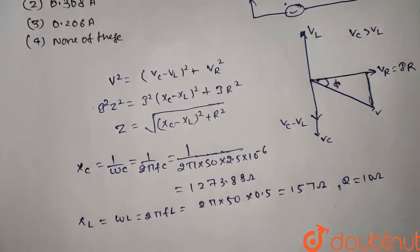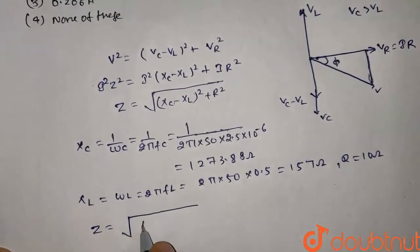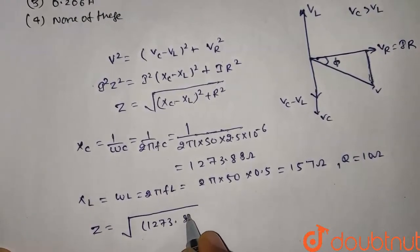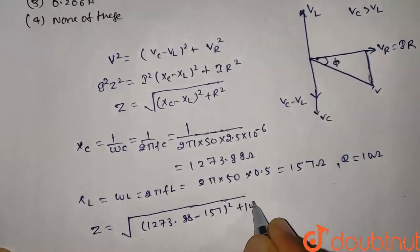Now we put the values. Z equals square root of XC minus XL: 1273.88 minus 157 squared, plus 10 squared.